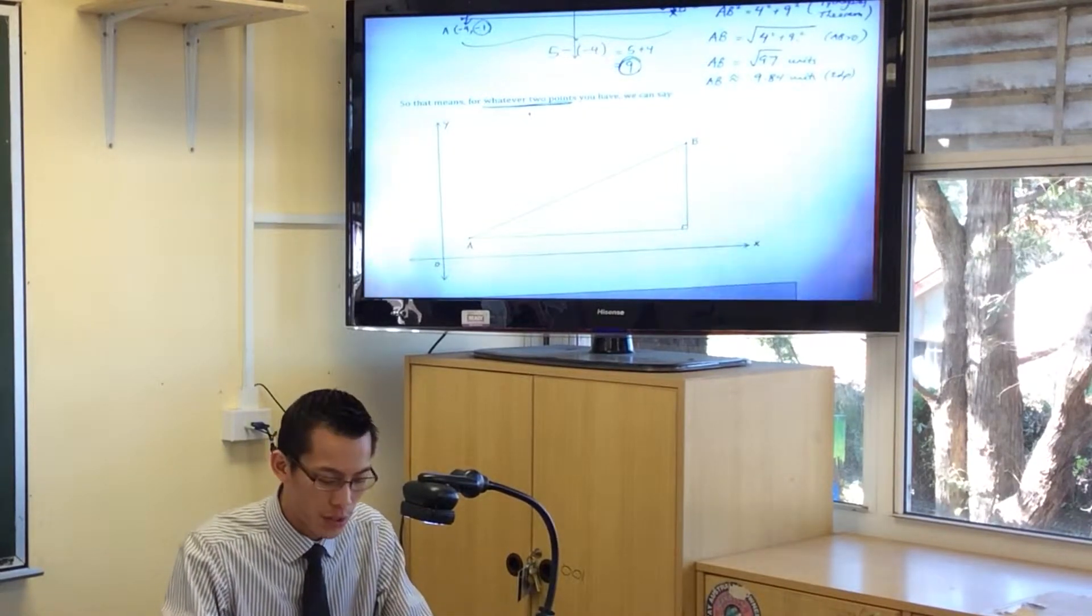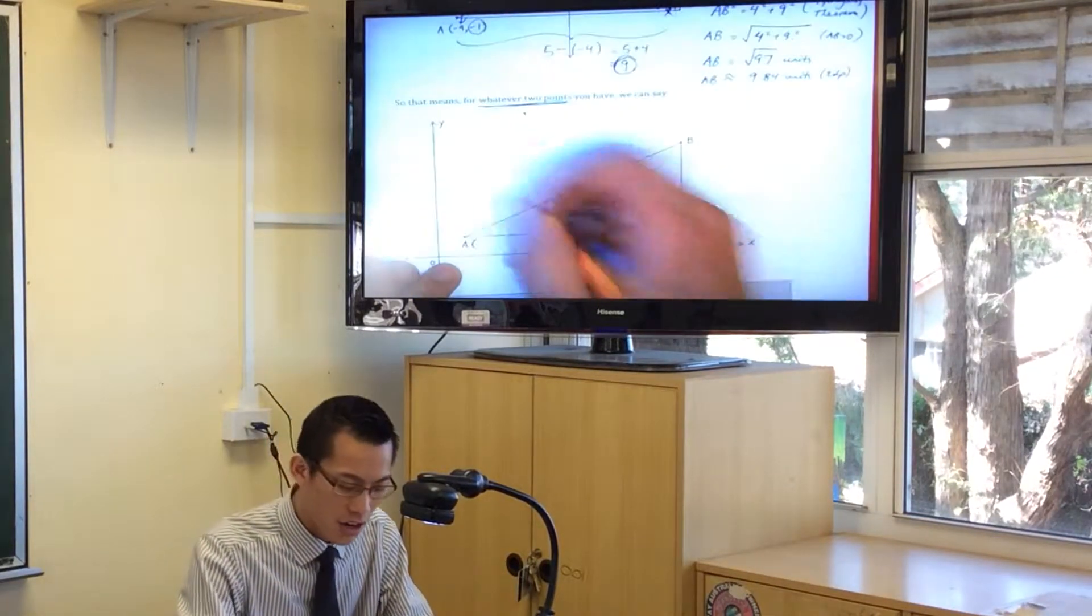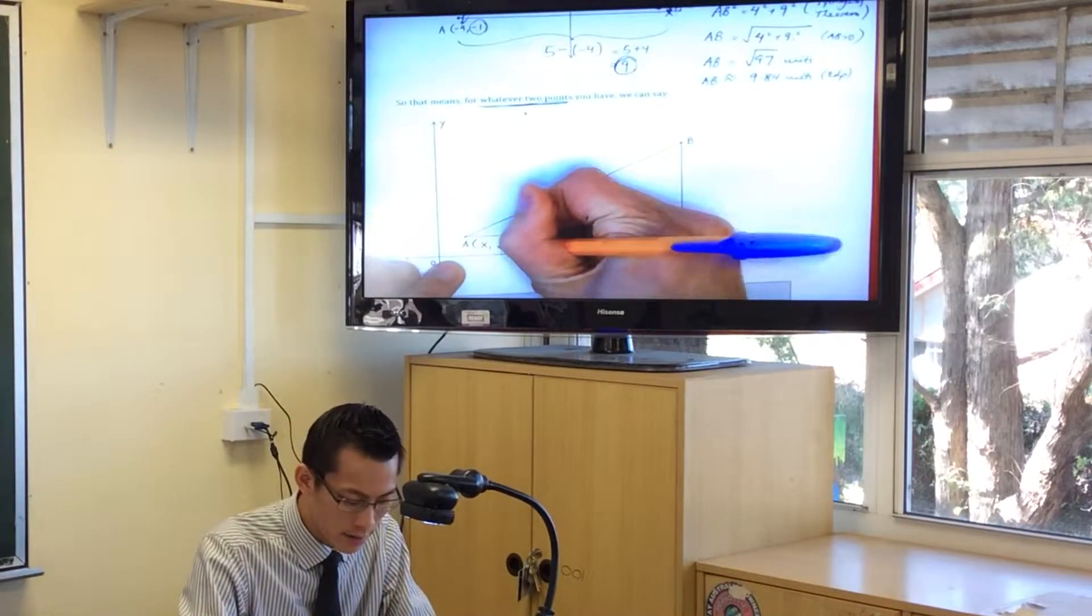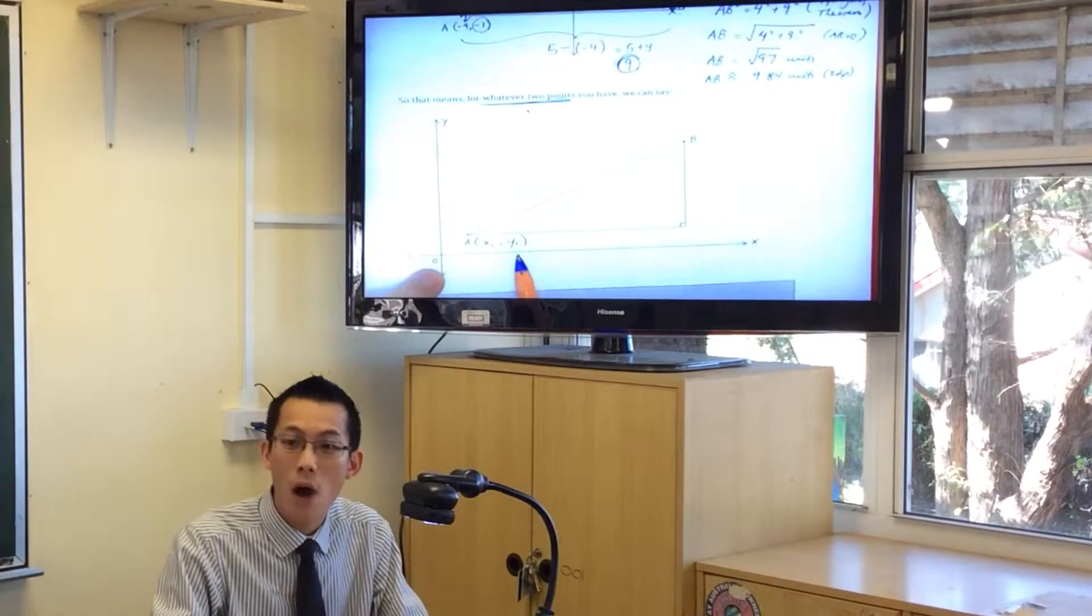So I've got my A and my B. I don't know what their coordinates are yet, but I'm going to give them some names, okay? So this first one down the bottom, I'm going to call it x1, y1, okay?